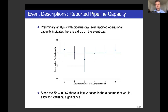Looking at reported operational capacity for the whole pipeline system on the event day, there is a drop on the day of the maintenance event — though not statistically significant — consistent with the idea that these events are impacting transmission capacity. The R-squared is 0.967, and with this rough outcome measure, statistical significance is not necessarily expected. This helps motivate our use of these events for examining changes in transmission capacity on flaring and methane.